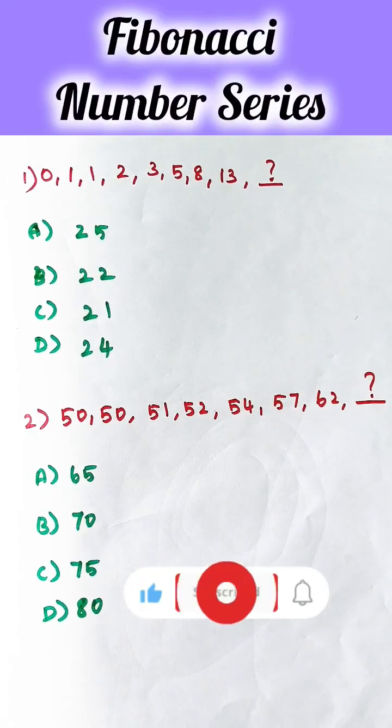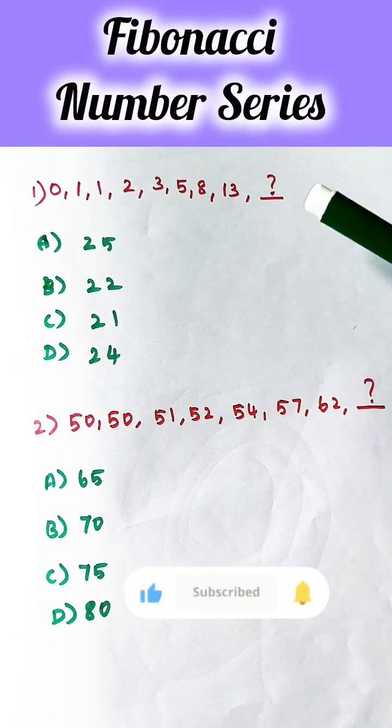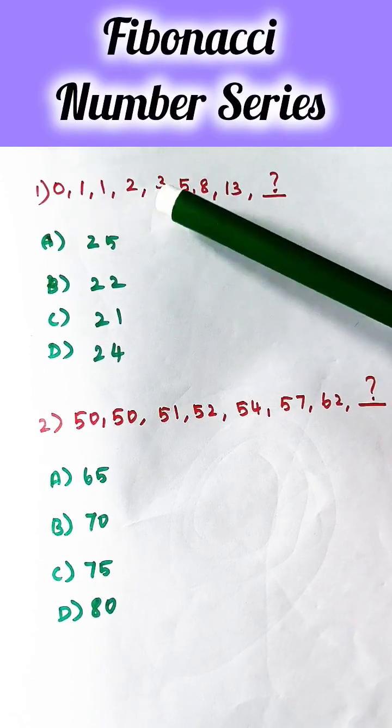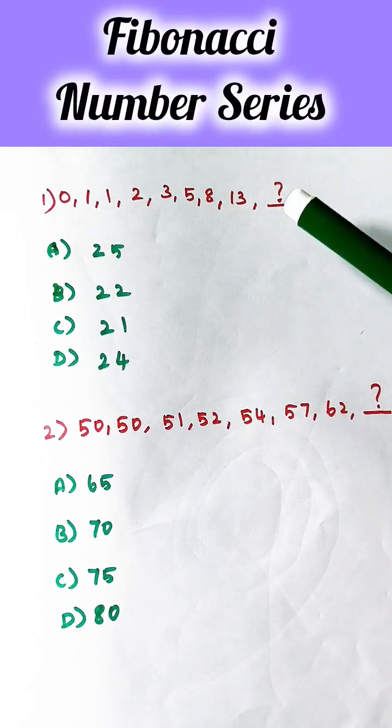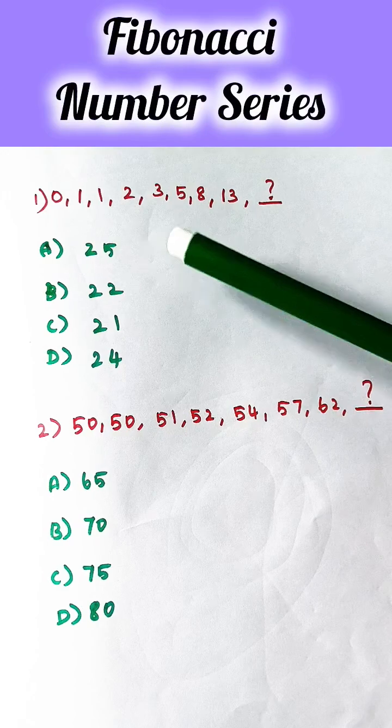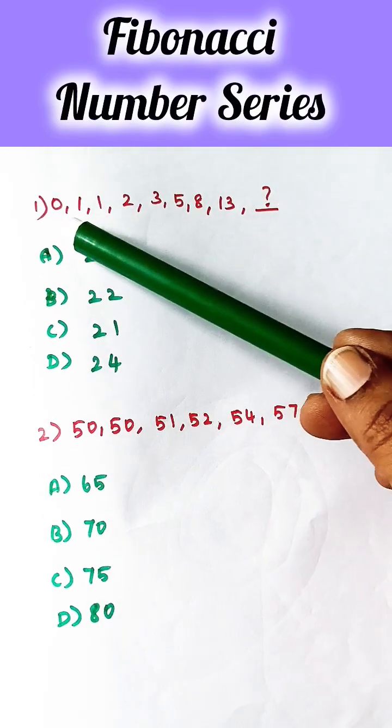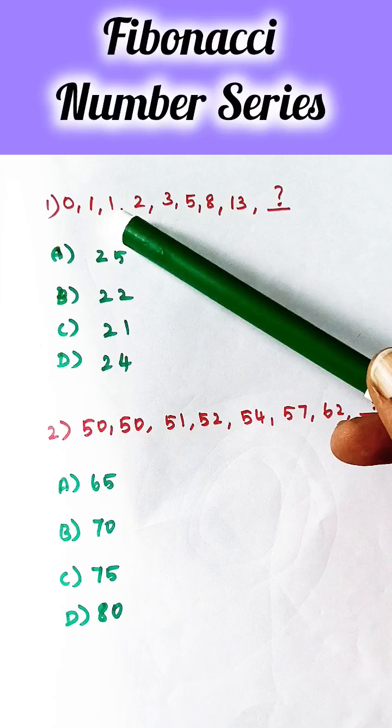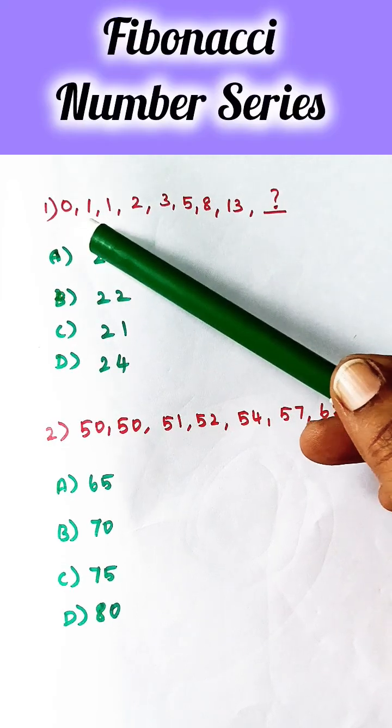Hello everyone, this video covers the Fibonacci number series. This series is 0, 1, 1, 2, 3, 5, 8, 13, and the next number you have to find out. In the Fibonacci series, the first two numbers are always 0 and 1, and your third number is calculated by adding the first two numbers.